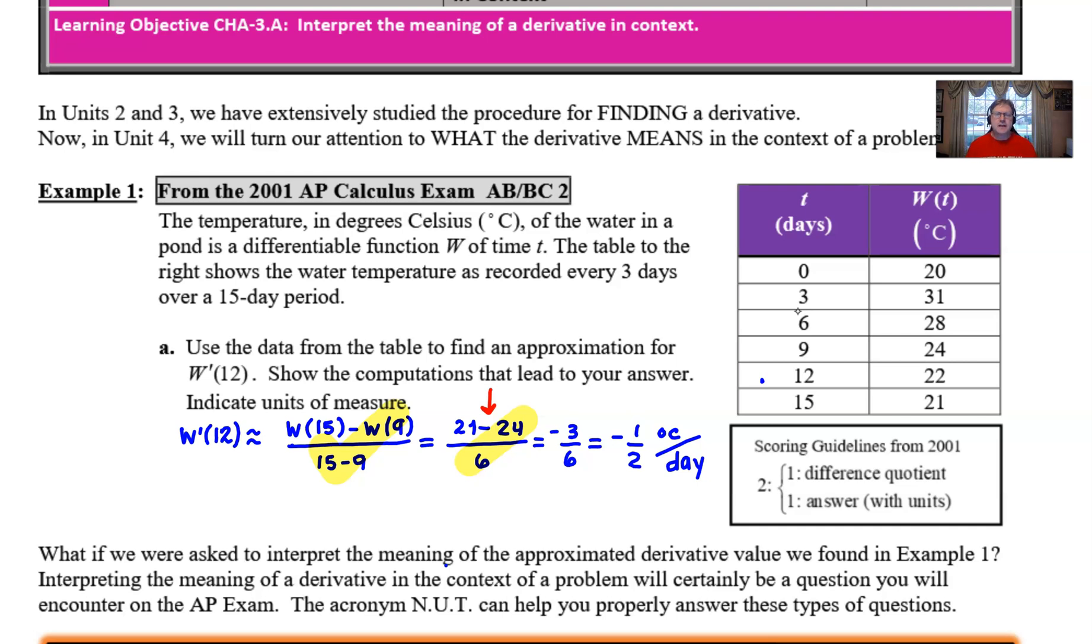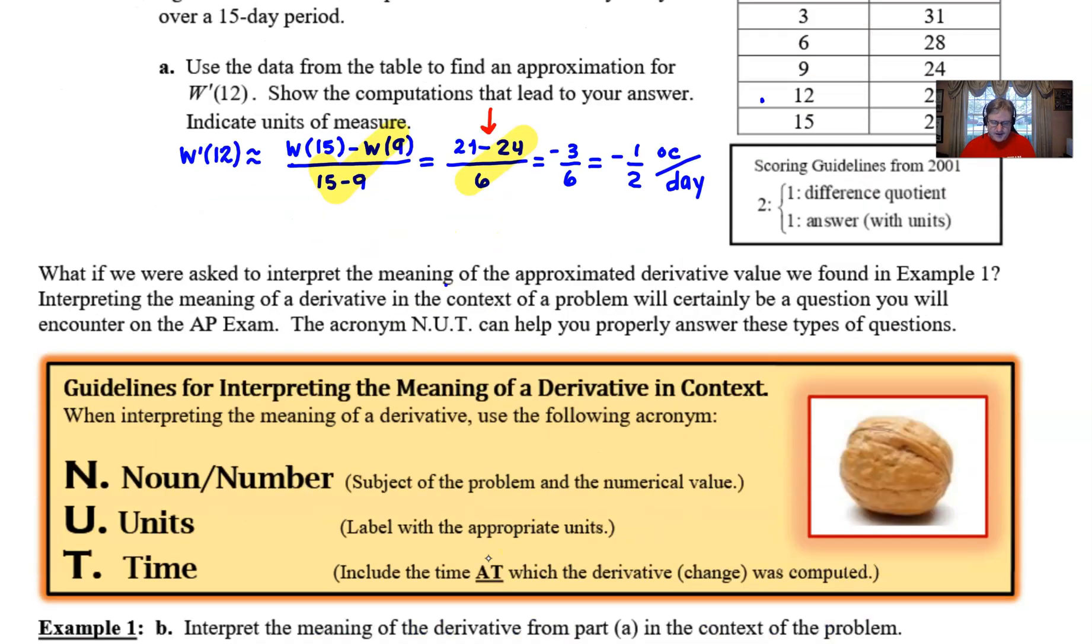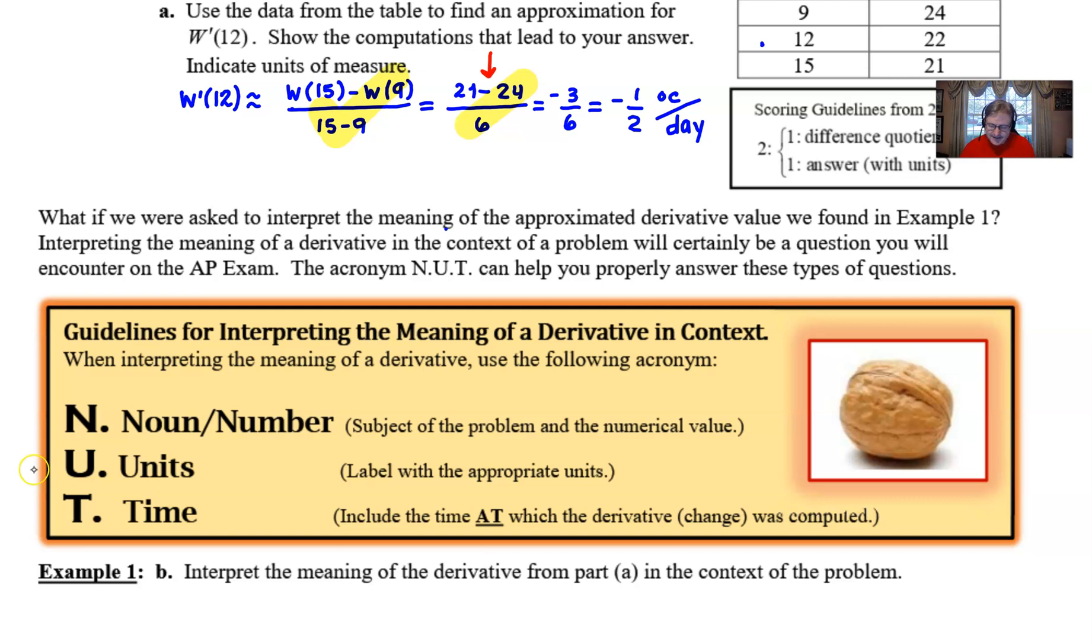Now, hopefully that makes sense, but that's really not what 4.1 is about. 4.1 is about writing, explaining, expressing what this means. So if we were asked to interpret the meaning of this approximated derivative value, what that means is that you're going to have to give yourself a little bit more time with this and insight and really paint the picture about what this means. And these are always asked on the AP exam. And I like to use the acronym NUT, N-U-T, because I think that can really help you understand context. So what's NUT? Well, here is NUT, the guidelines for interpreting the meaning of a derivative in context.